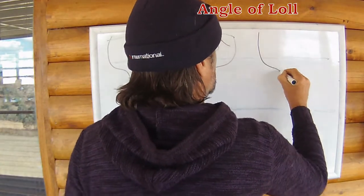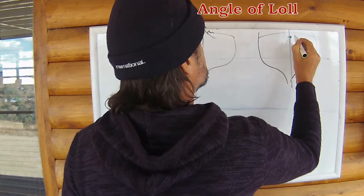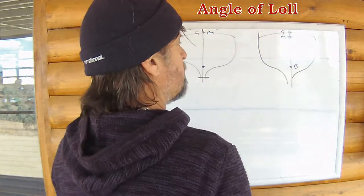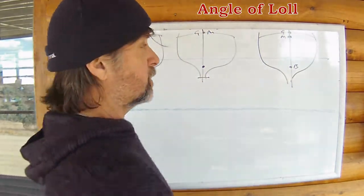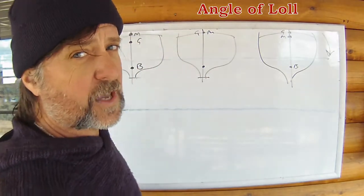And once G rises above M, I'm just going to put M down here because I'm running out of room. There's G, there's M, and there's B. We're unstable. The ship is going to experience a negative GZ. She's going to start capsizing.